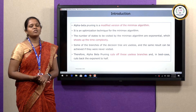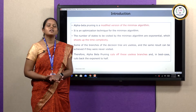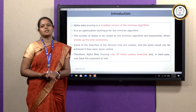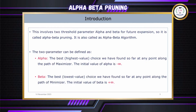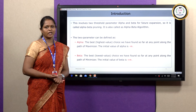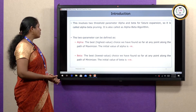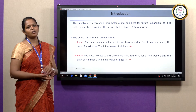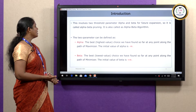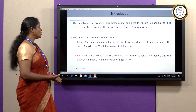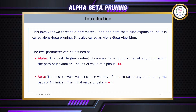Pruning means we are deleting or removing useless nodes and useless paths. In this algorithm, we need to discuss two important parameters: one is alpha, another one is beta. Alpha represents the highest value, which means the best choice of path we are going to traverse.